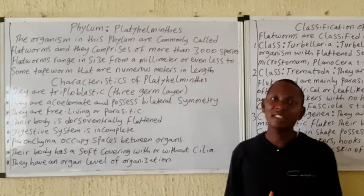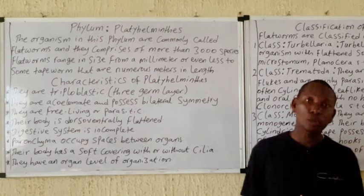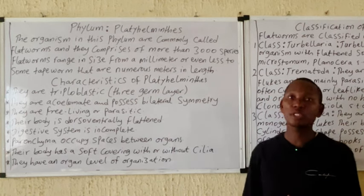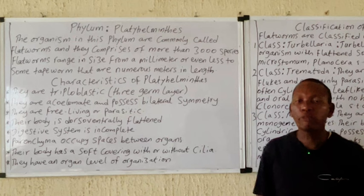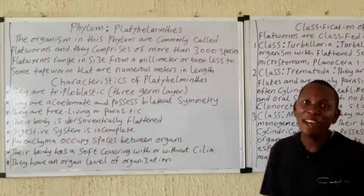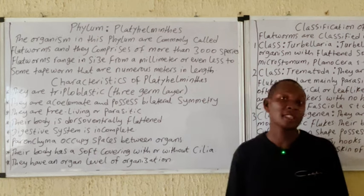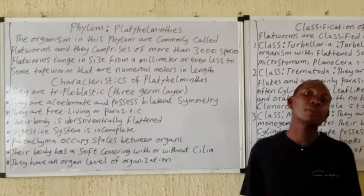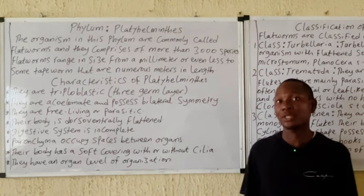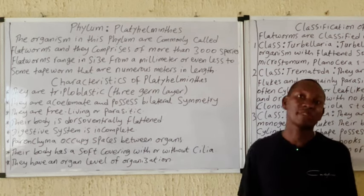...is commonly regarded as the flat ones, and they comprise more than 3,000 species of organisms. These phyla are free-living or they can be parasitic, and they range from very small size to some that are very large in length, such as the tapeworm, which can be several meters.